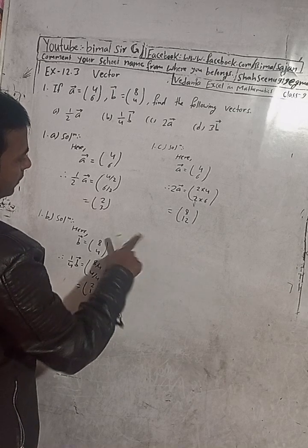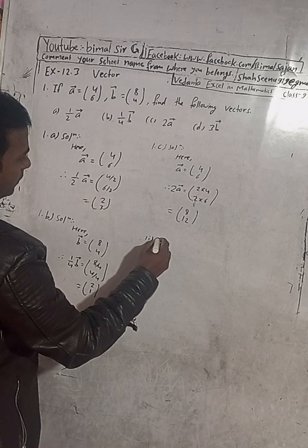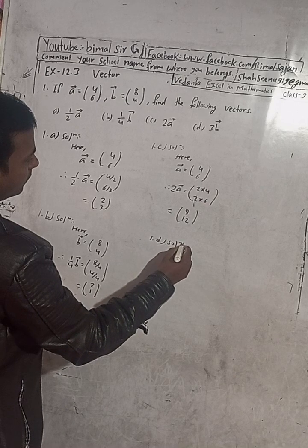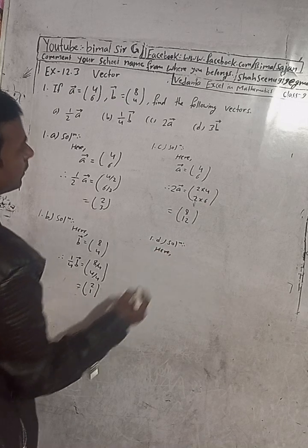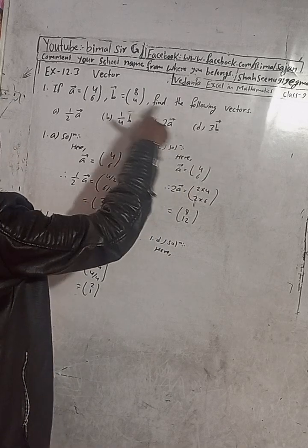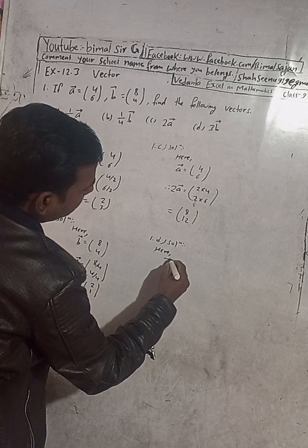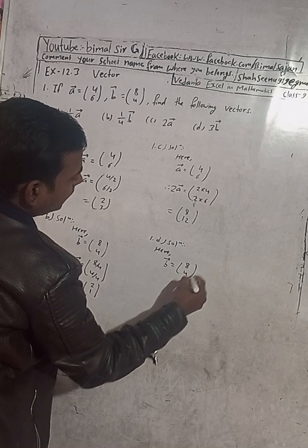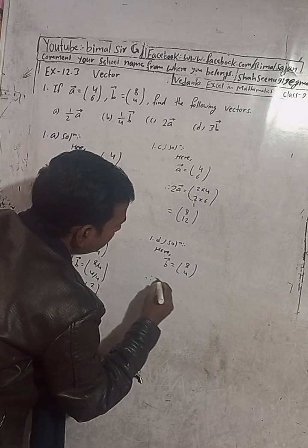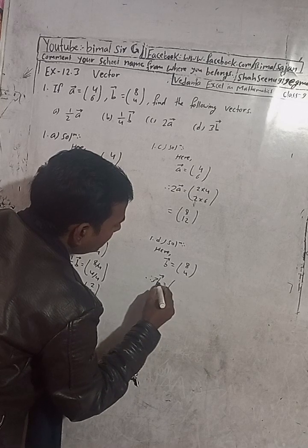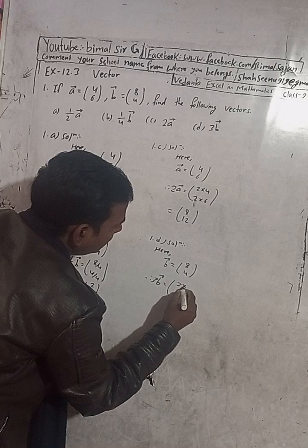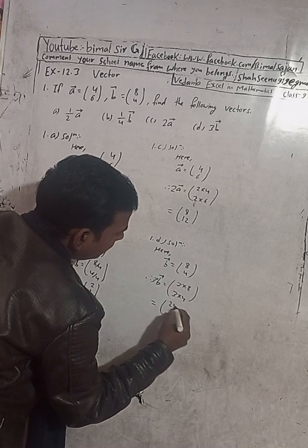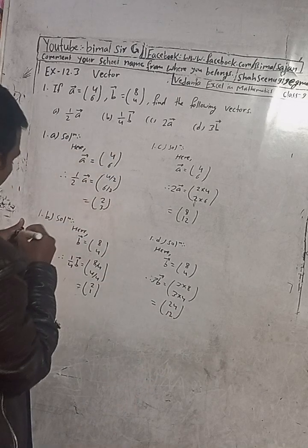Now d number solution. Here we have to find 3b vector, so b vector is equal to given (8, 4). So to find the 3b vector, therefore 3b vector is equal to three into eight or eight into three, and this is three into four. So this is equal to eight three are 24, four three are 12. So this is the solution, let me check the answer.